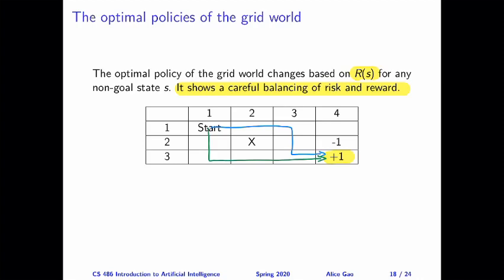And then there are also some risks. For example, if we follow the blue path, the path going above, then when we walk by the state S, there's a chance that we might fall into that state.